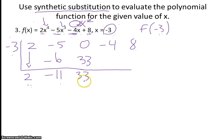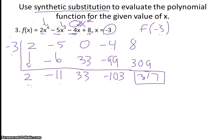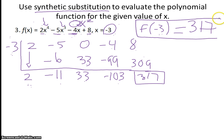Now I multiply 33 times negative 3, which gives me negative 99. I add straight down, which is negative 103. Then I multiply negative 103 times negative 3, which is positive 309. I add straight down, which gives me 317. And that right there is the answer I get when I evaluate f of negative 3 using synthetic substitution.